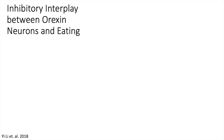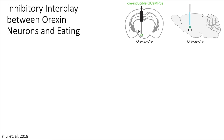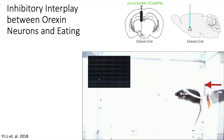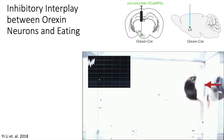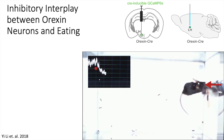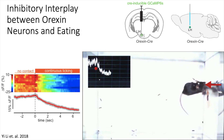Here's an example of a study that uses fiber photometry. The authors were interested in neurons within the lateral hypothalamus that contain the neuropeptide orexin. It has long been known that activating orexin neurons can drive feeding behavior, but how the cells respond when an animal begins to eat was not known. The authors injected GCaMP into the lateral hypothalamus of orexin-Cre mice and implanted fiber optics in the lateral hypothalamus. Whenever a hungry mouse drinks sugar water, you can see a drop in the measured calcium signal. This suggests that orexin neurons are active when the mouse is seeking food, but the activity begins to decrease after the animal has found food.